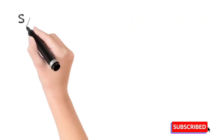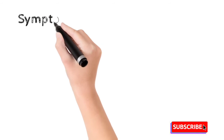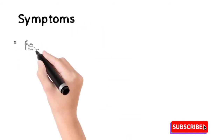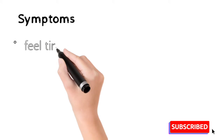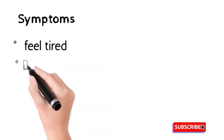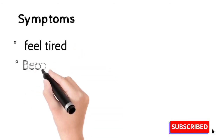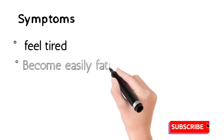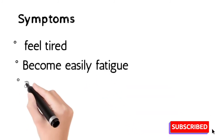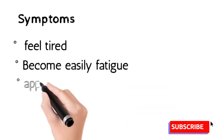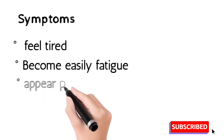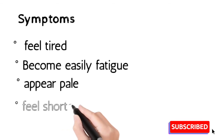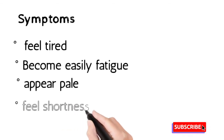The symptoms of anemia: sometimes no symptoms appear. If symptoms do appear, the most common are feeling tired and becoming easily fatigued, as the delivery of oxygen is not proper to the cells due to less hemoglobin in the blood. The appearance is pale, and there is shortness of breath as more oxygen is required by the cells.